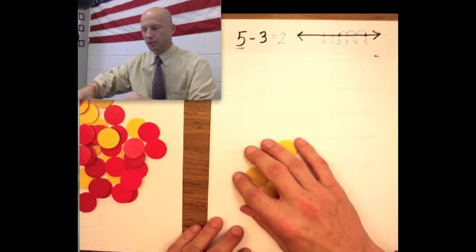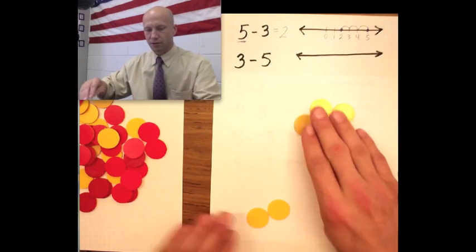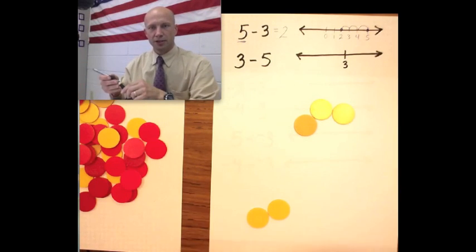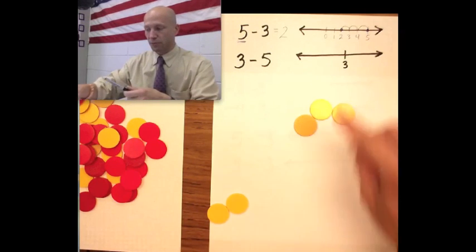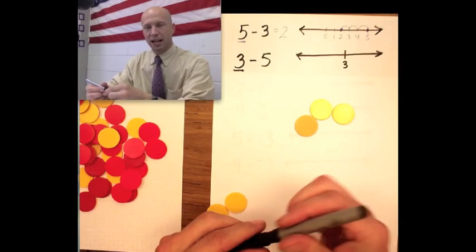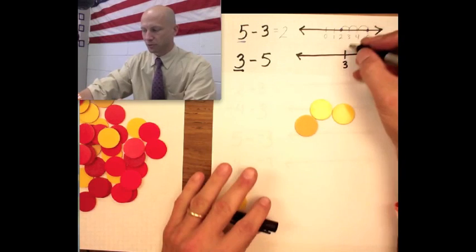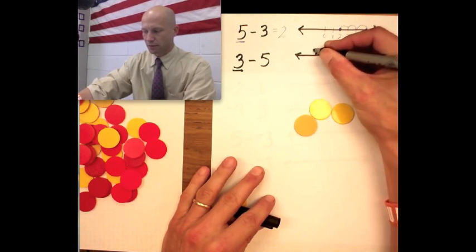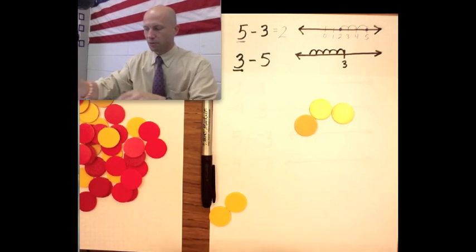Next problem: 3 minus 5. We're going to start with 3 yellows. We'll start here on our number line at 3. Now the number line I think is a better model this time. The 3 says that this is where I'm starting - this is my starting number. I like to underline it sometimes. I already know when I subtract I'm going to go this way, so I'm going to go 5 places to my left: 1, 2, 3, 4, 5.